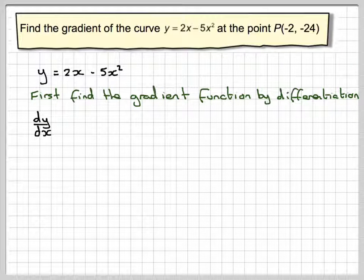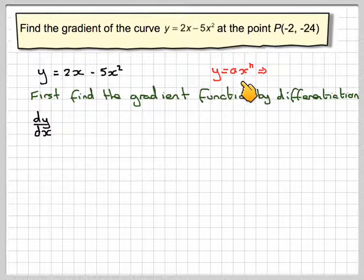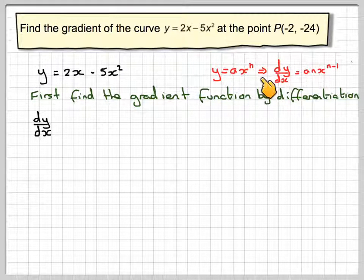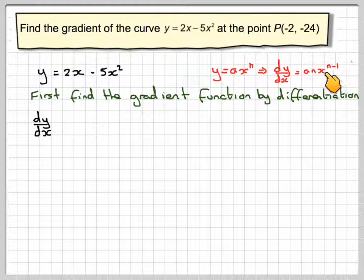So dy/dx, if we just remember, if y equals ax to the n, then dy/dx will be: you bring the power down, so it becomes a times n times x, and then you reduce the power by 1.